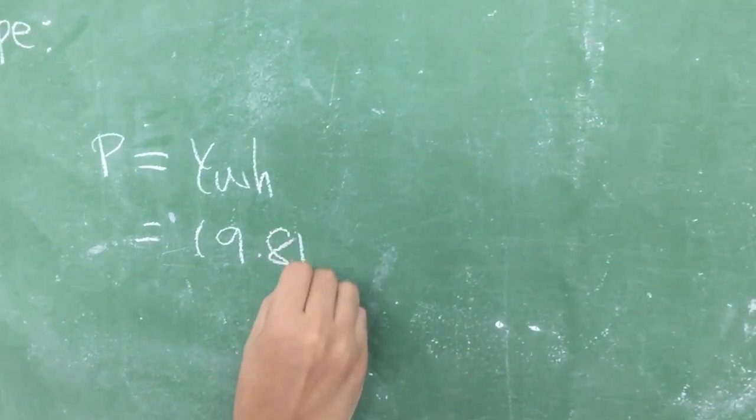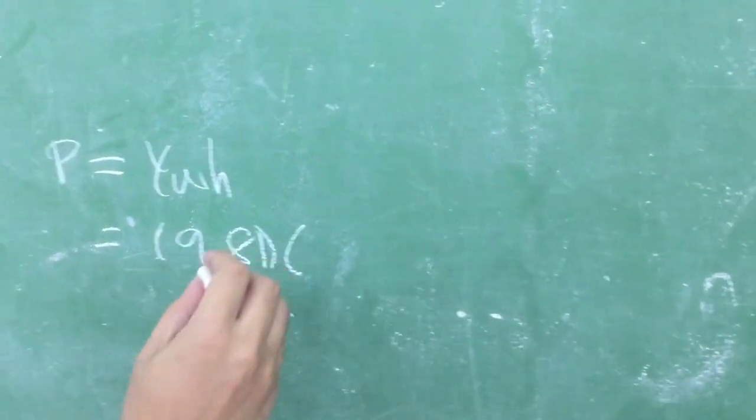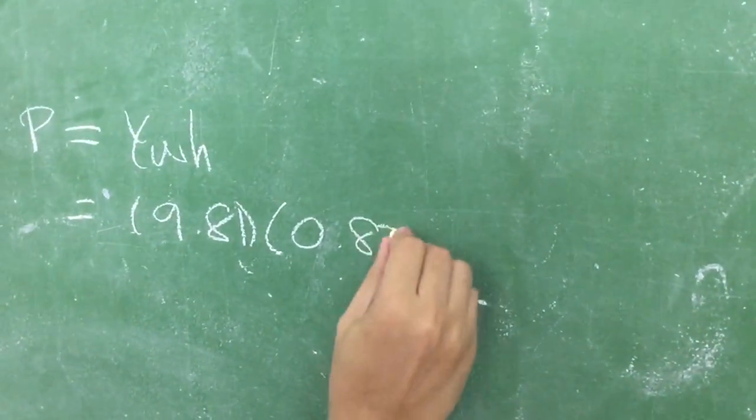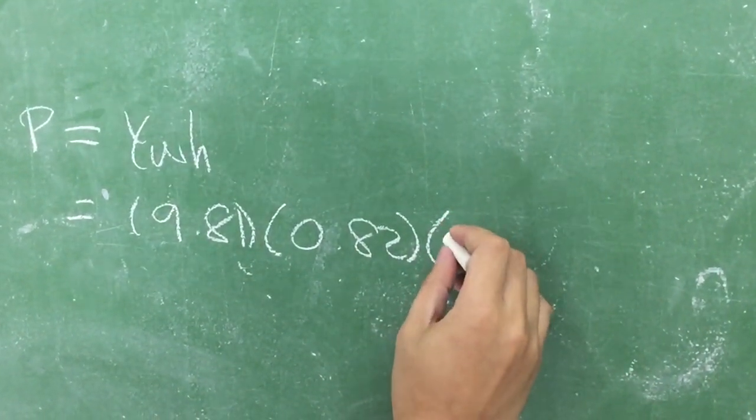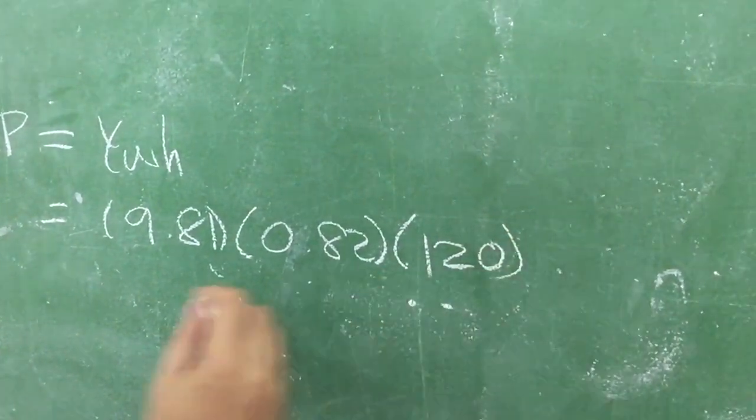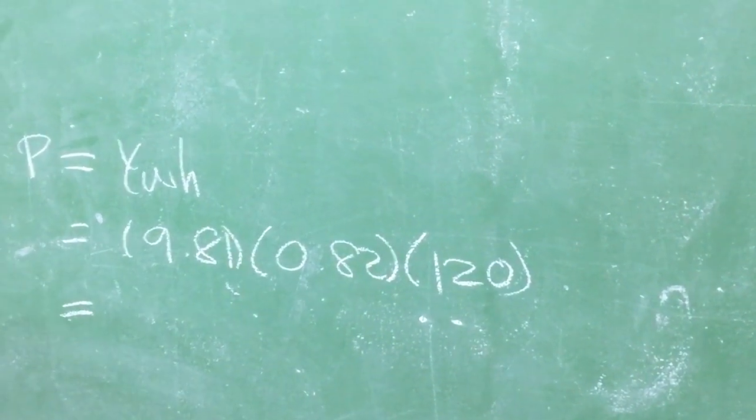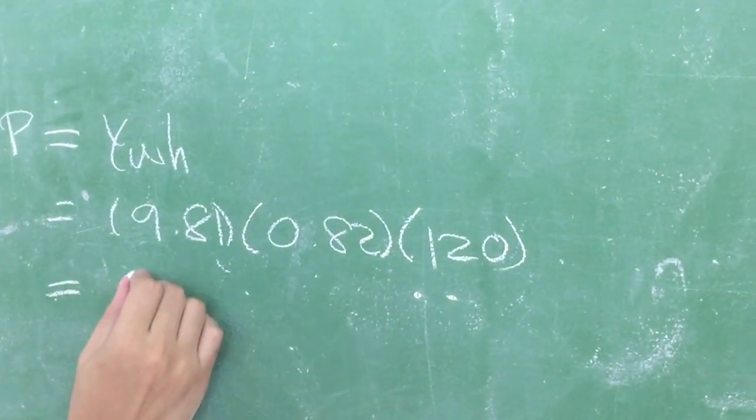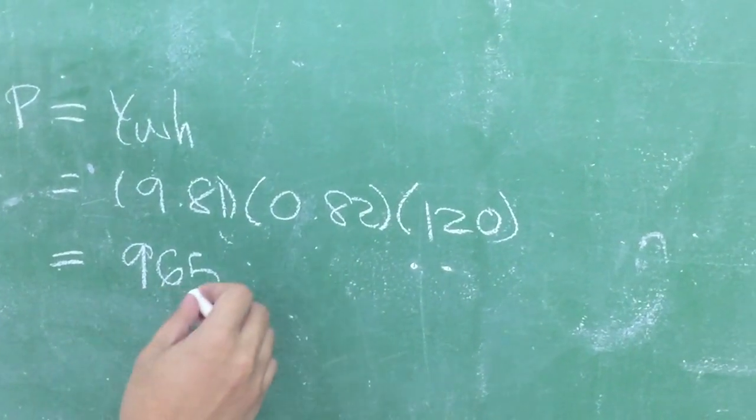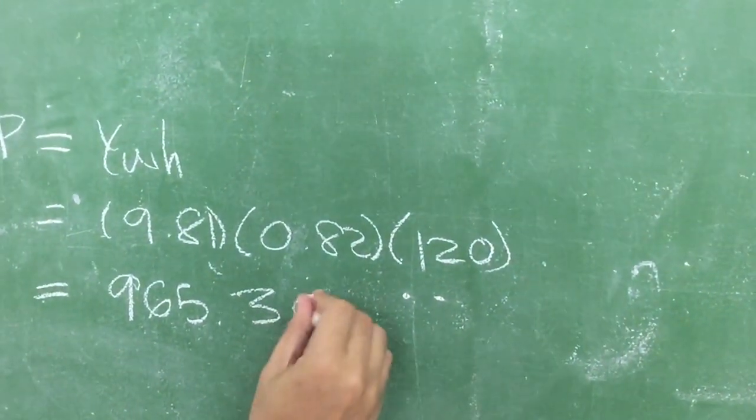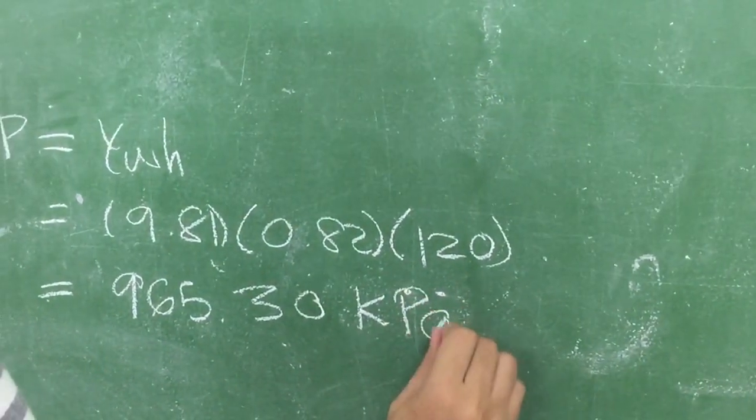Now solving for the pressure, which equals the unit weight of water times height. We have unit weight of water, 9.81, times 0.82 (the specific gravity of oil), times the height of 120. So we get the answer of 965.30 kPa.